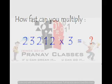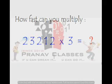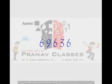How fast can you multiply 23,212 with 3? I'm giving you five seconds for that, so your time starts now. Time is up — the correct answer would be 69,636, right? I'm sure you must have got the same answer.